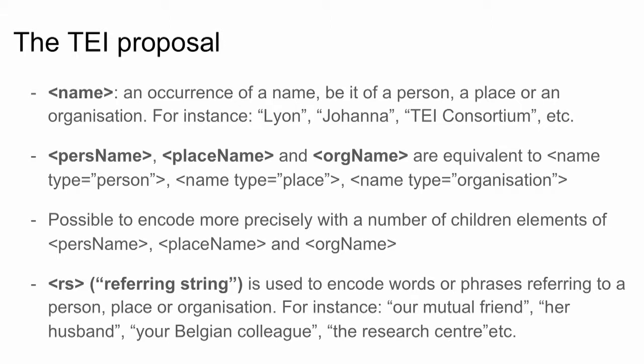Here is the TEI proposal to encode this kind of phenomena. We have 'name', which is any occurrence of a name — a person, organization, or place name — so you just wrap the name in the name element. Or you can have more specialized elements: 'persName' for people, 'placeName' for places, and 'orgName' for organizations. Functionally they are completely equivalent to the name element with a type attribute of 'person', 'place', or 'organization'.